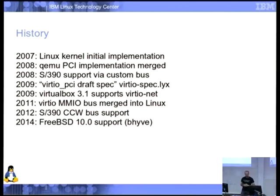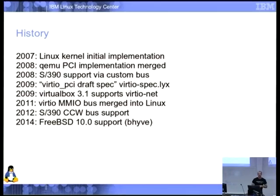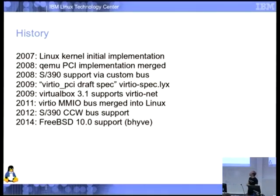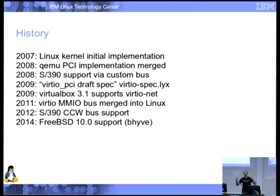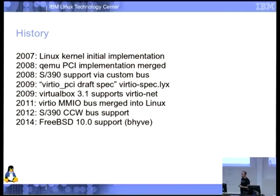History. The kernel implementation of VirtIO PCI and also VirtIO Lguest — there's another bus not in the spec called the Lguest bus, which is basically an array of descriptors — went in to the kernel in 2007, labeled experimental. So of course no one was ever going to use it in production. The QEMU PCI implementation merged into the main QEMU tree a year later in 2008. And that same year, the S390 people took basically what I'd done for Lguest and made a variant for S390 platforms, producing their own custom bus.